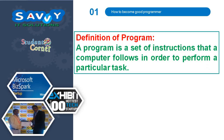The definition of a program: a program is a set of instructions that a computer follows in order to perform a particular task. We can also simply say that a program is a set of instructions to solve a problem.